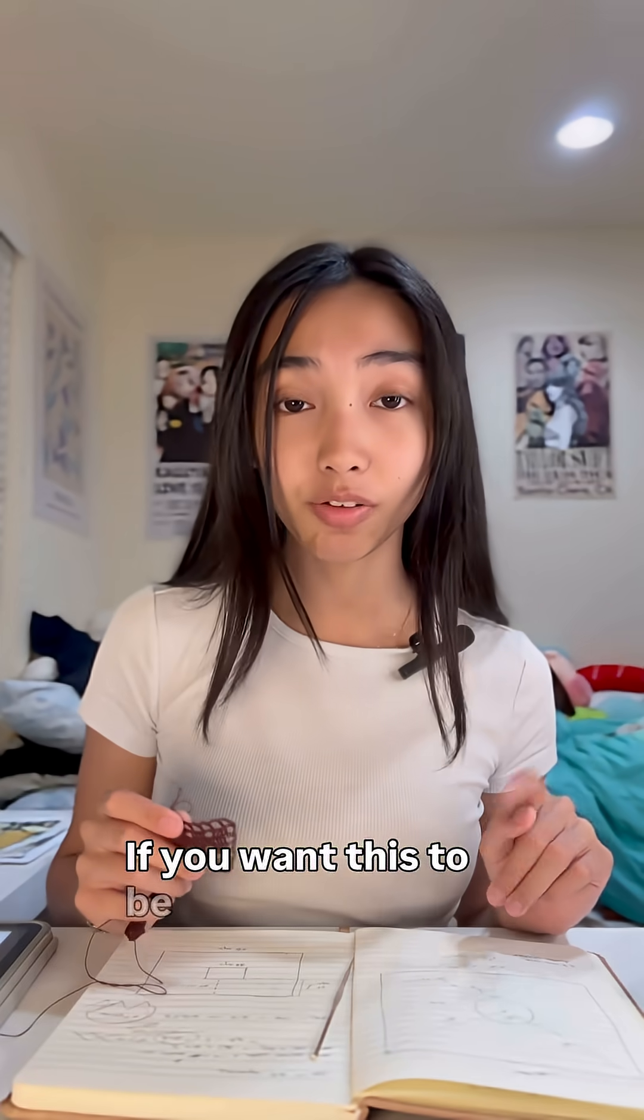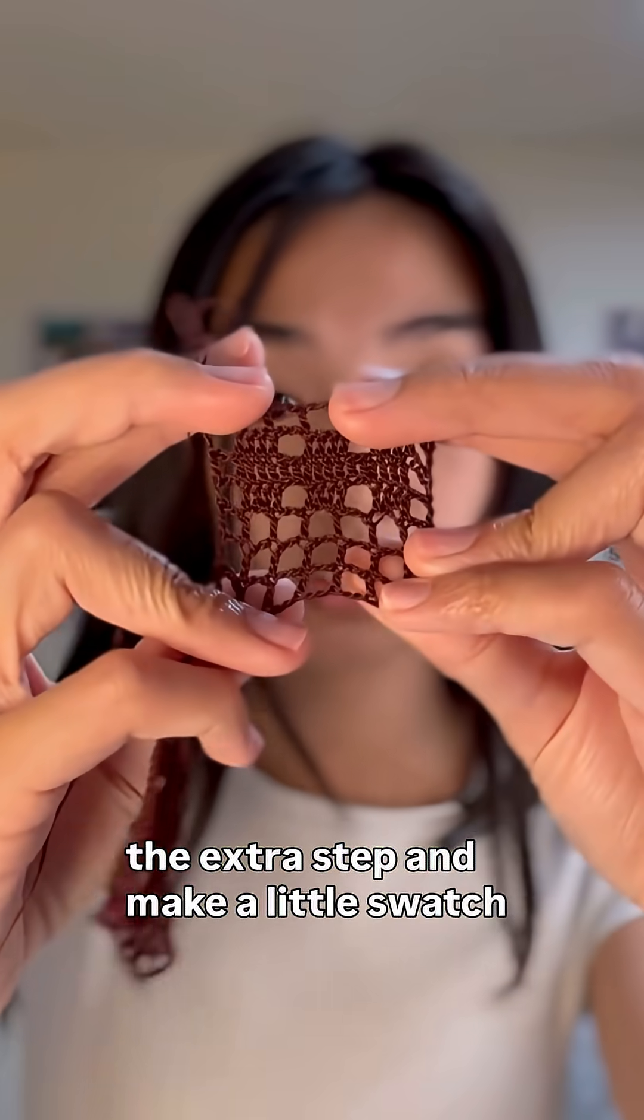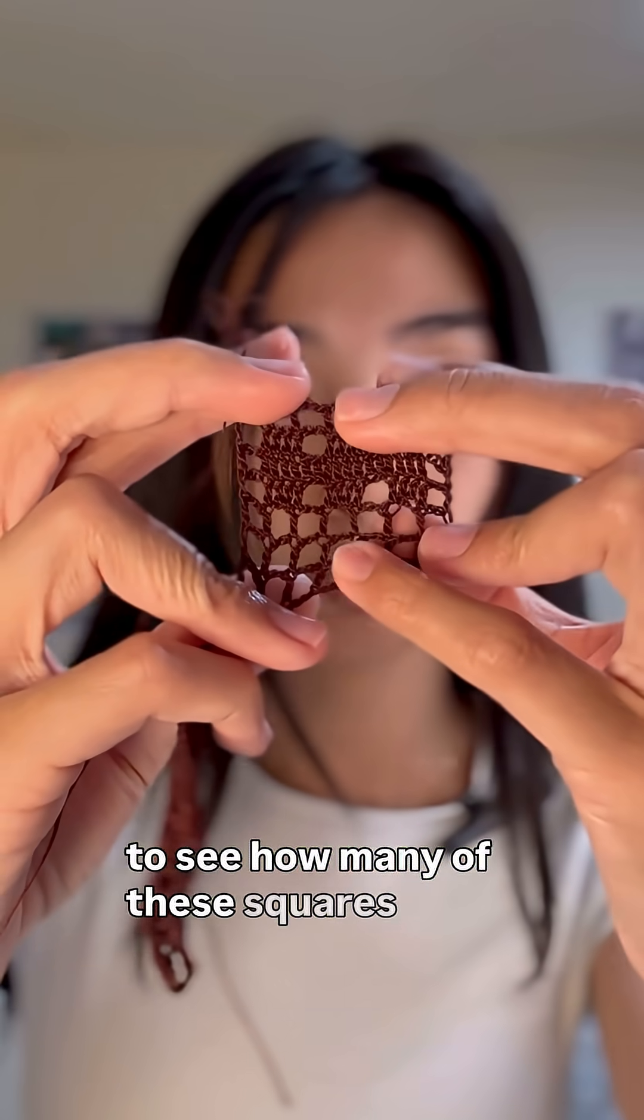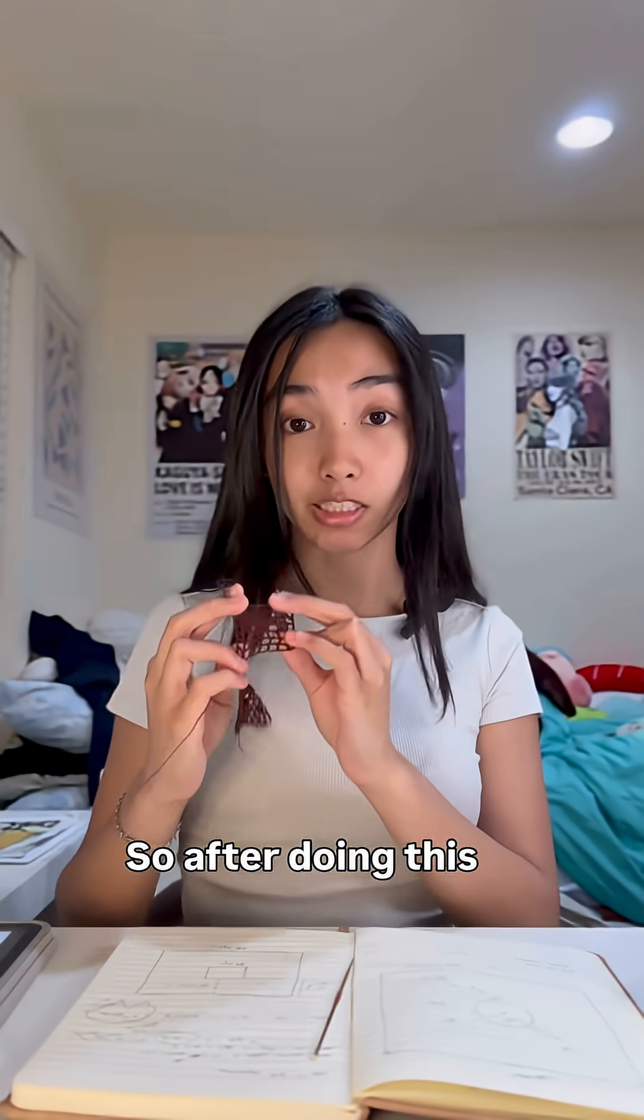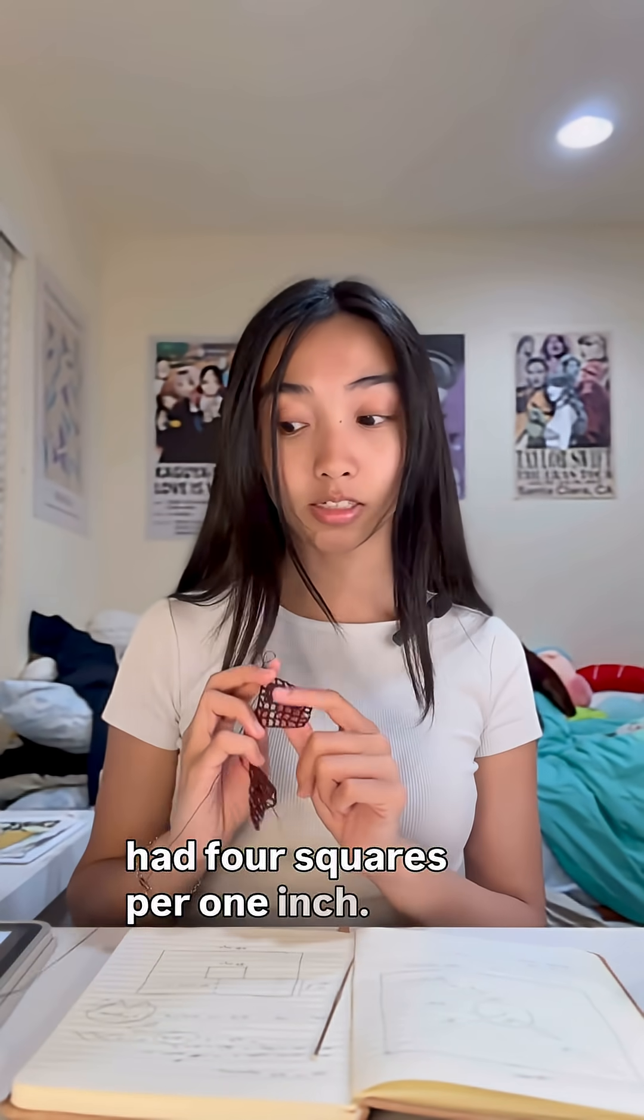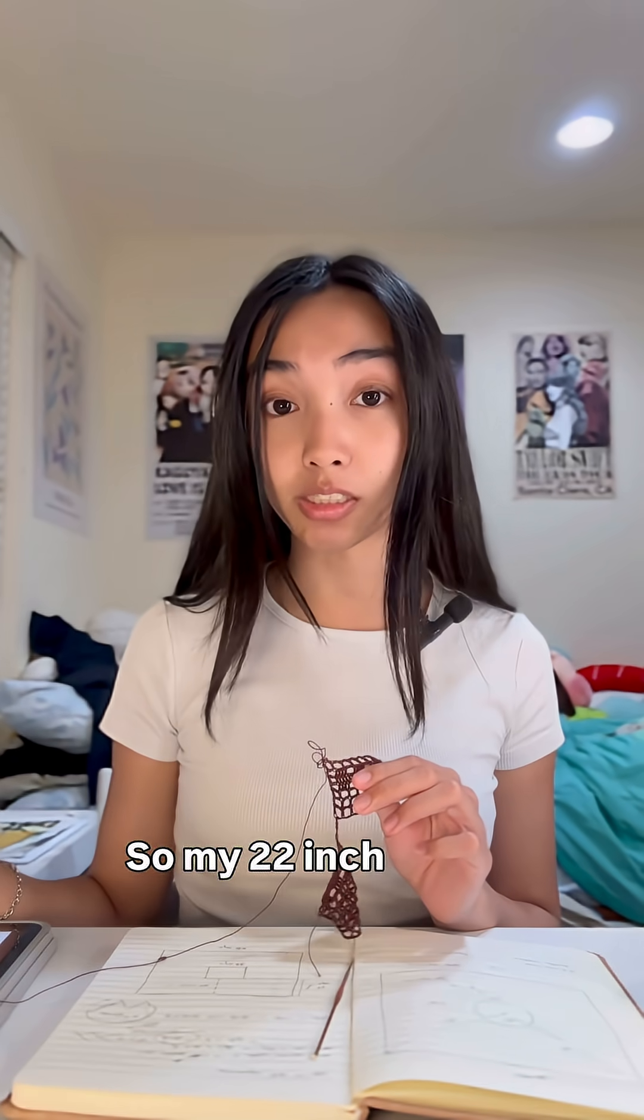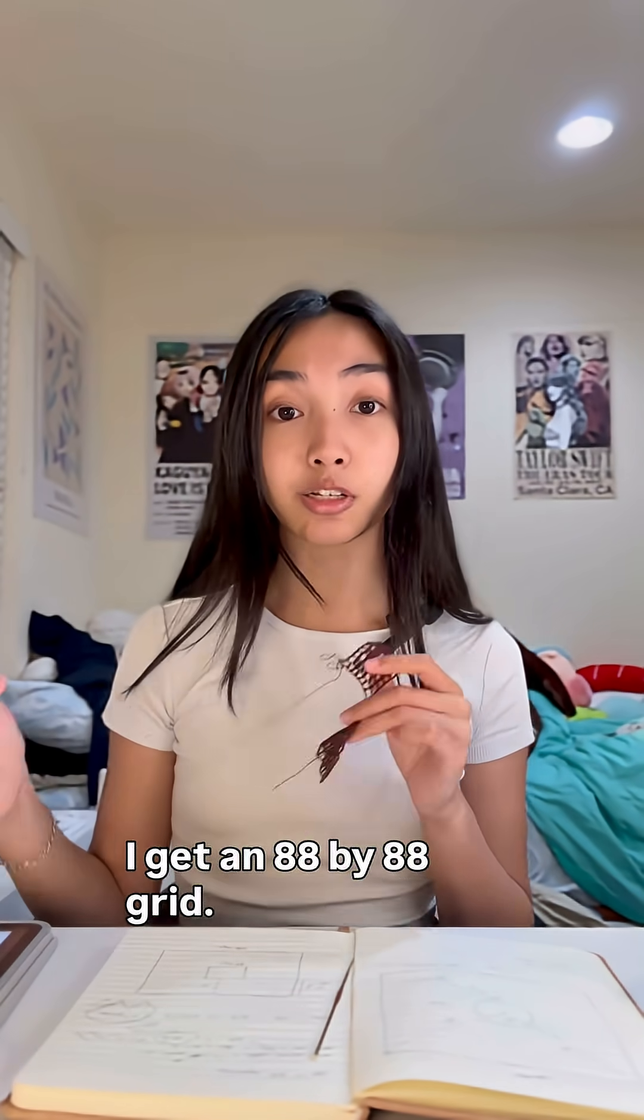If you want this to be a filet crochet design like I'm doing, you need to do the extra step and make a little swatch to see how many of these squares will fit into your dimensions. So after doing this swatch, I found that I had four squares per one inch. So my 22 inch dimensions for my square translates into 88 squares. So 22 inches times four, I get an 88 by 88 grid.